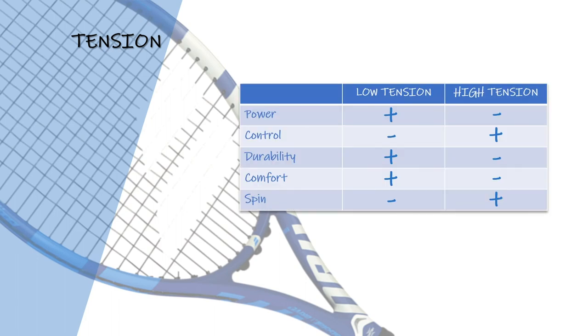In terms of tension, the higher it is, the more control the player will have when hitting the ball, but less power will be released from it. Conversely, less tension on the string means that the player will have less control over their shot, but they will have more power.